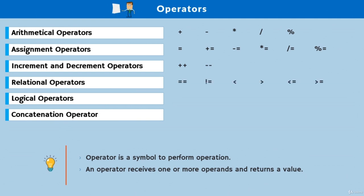Relational operators like ==, !=, <, > are used for comparison between two values. Logical operators include && (AND — both conditions must be true), || (OR — at least one condition must be true), and ! (NOT — reverses the condition: true becomes false, false becomes true). The concatenation operator (+) concatenates two strings or a string and number, attaching the second value at the end of the first.